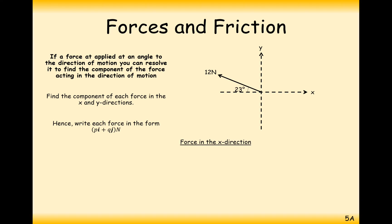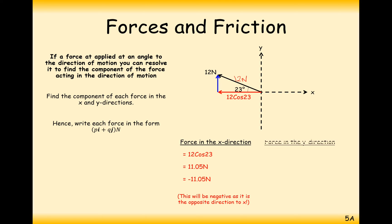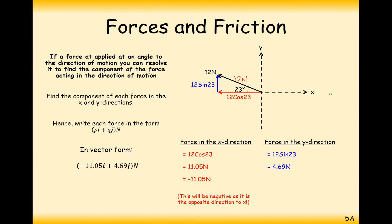For this triangle, remember the force must go on the hypotenuse of the right-angled triangle. Create the right-angled triangle and bear in mind that the x-axis is positive to the right and negative to the left. So the horizontal component will be written as minus 11.05 newtons when written in vector form, since it acts to the left.